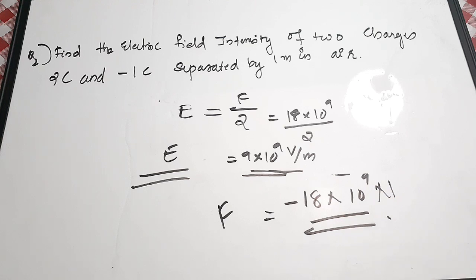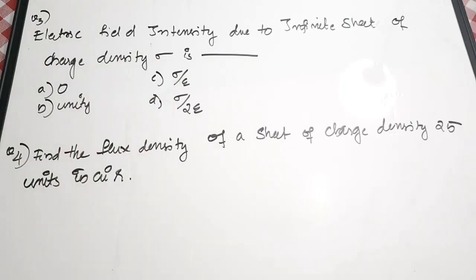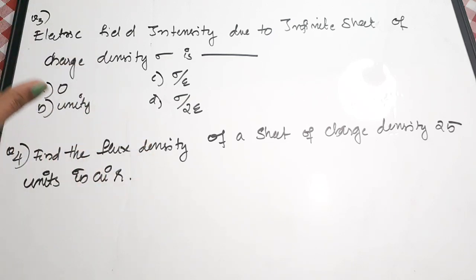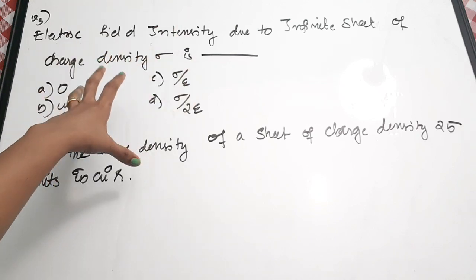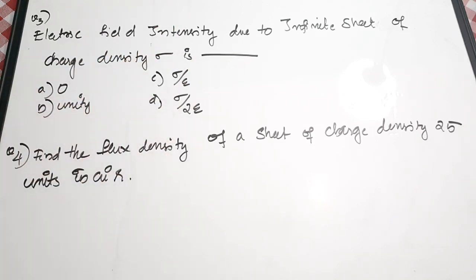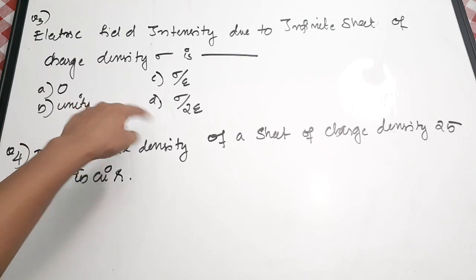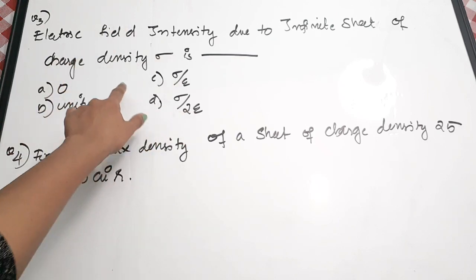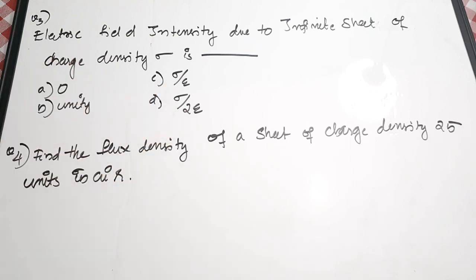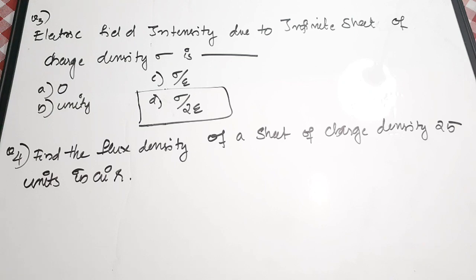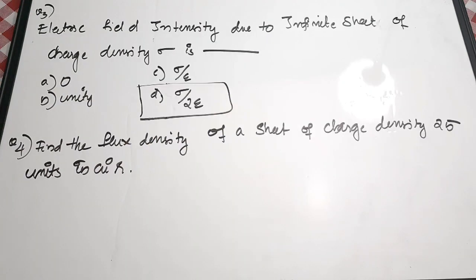The next question asks for the electric field intensity due to an infinite sheet of charge density sigma. This is a direct formula question. The electric field intensity due to an infinite sheet charge is E = σ / (2ε), where sigma is the charge density and epsilon is the permittivity.